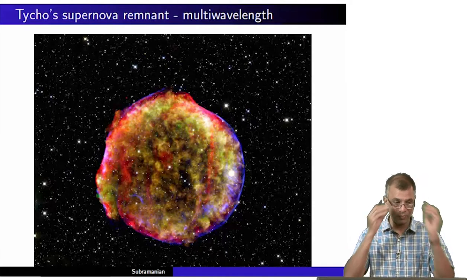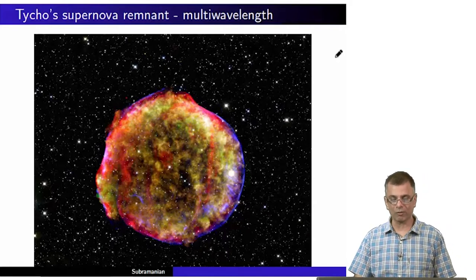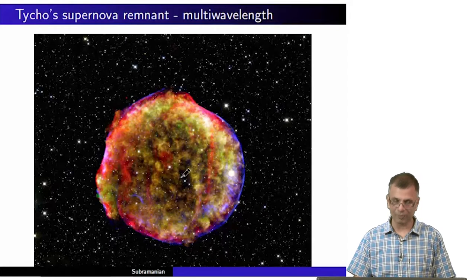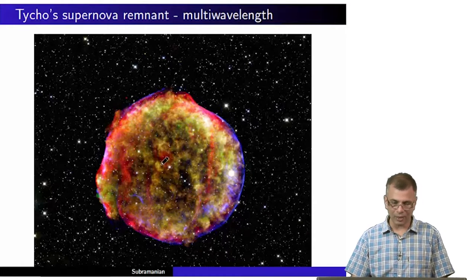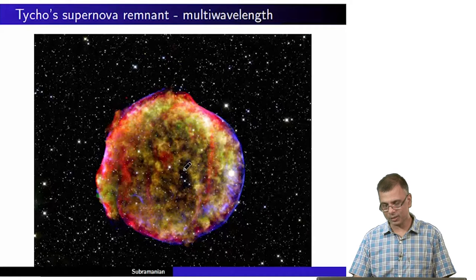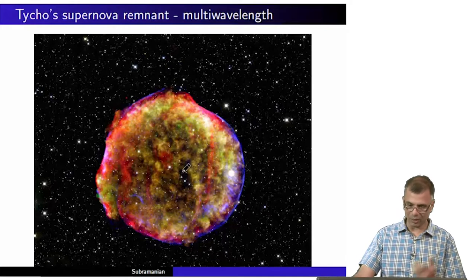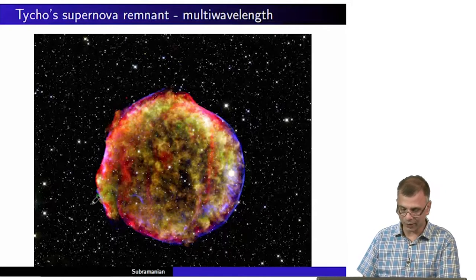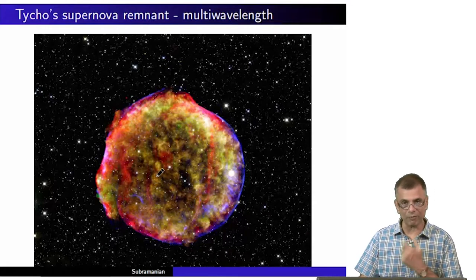This is what we had seen some time ago — a multi-wavelength picture of the Tycho supernova remnant. This is not the supernova itself; this is the supernova remnant. The supernova would have been somewhere in the center, gone off, and for reasons that we will see, it set off a blast wave that propagated quasi-spherically, heating the material inside it to varying degrees.